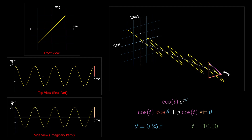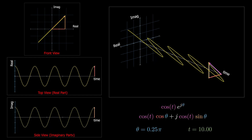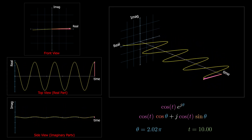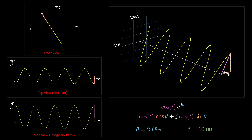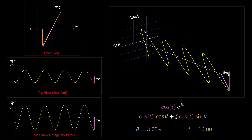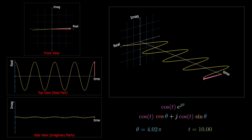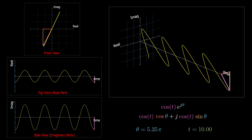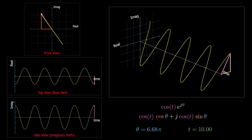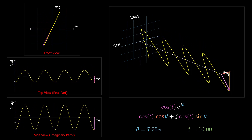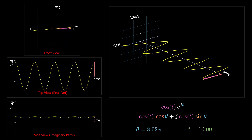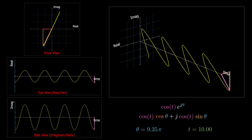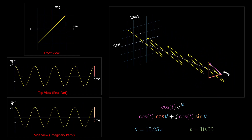Now the magnitude is a function of time, and as the phase angle changes, the whole function rotates in the complex plane. This formula can represent electrical signals such as voltage and current. For instance, the voltage across an impedance has exactly this same form, as we will see in this video.